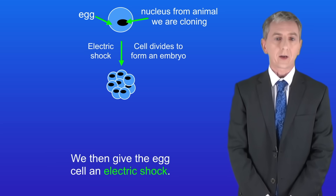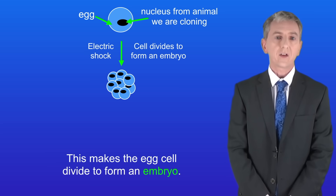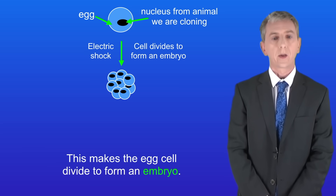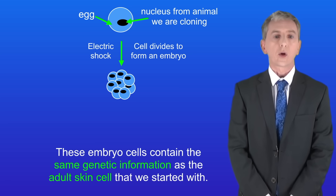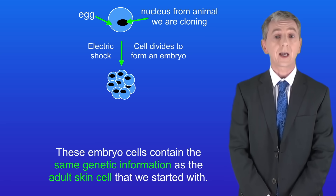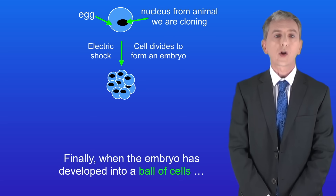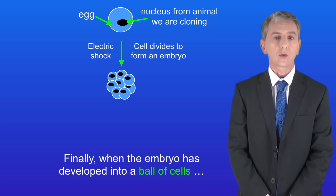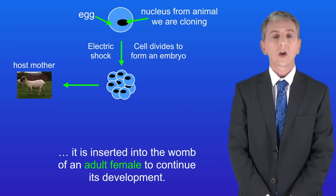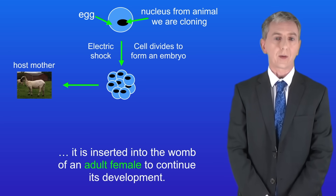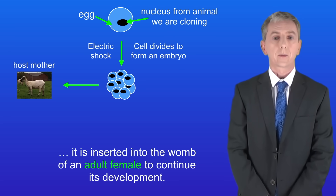We then give the egg cell an electric shock and this makes the egg cell divide to form an embryo. These embryo cells contain the same genetic information as the adult skin cell that we started with. Finally, when the embryo has developed into a ball of cells it's inserted into the womb of an adult female to continue its development.